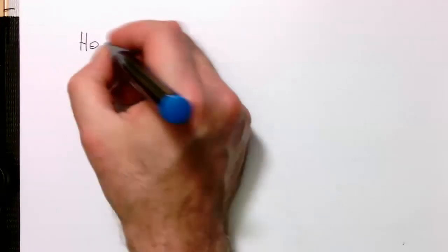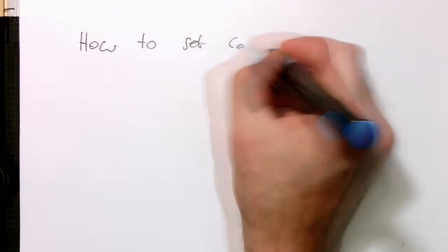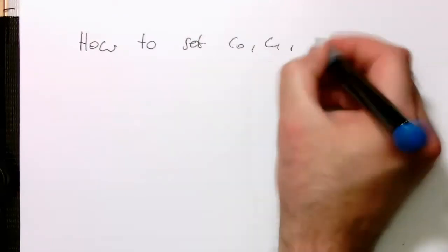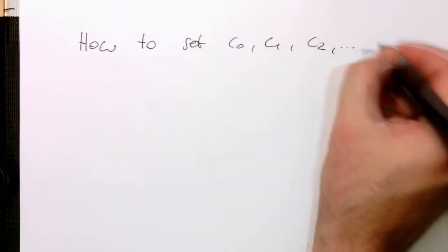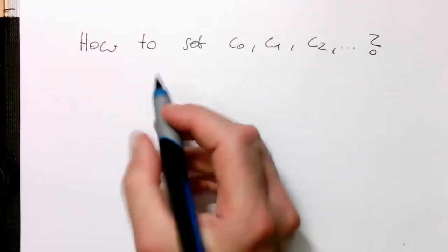So the question is now obviously how do we set these coefficients here we are getting at the output. So how do we set C0, C1, C2 and so on if we don't know what the channel actually is.